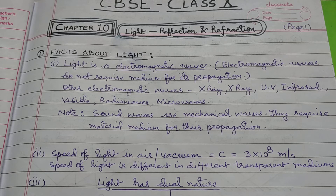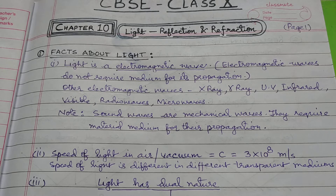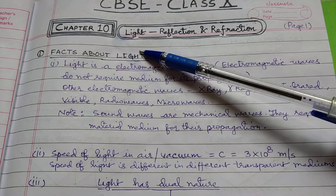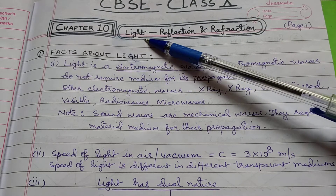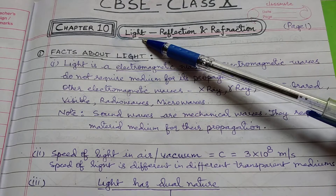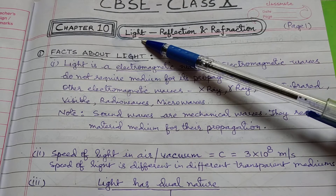Good morning all of you. Today we are going to discuss chapter 10 of class 10th and it's about light, reflection and refraction. The very first question that arises in our minds is: what is light? Basically, light is a form of energy that produces sensation of vision. Isse hum objects ko dekh paate hai.